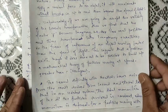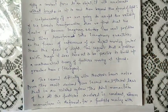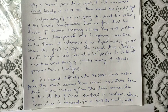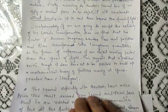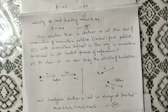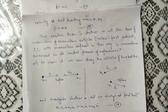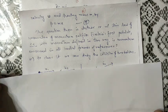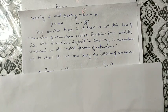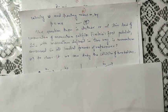The second difficulty with Newton's laws arises from a result derived from the second and third laws: in an isolated system, the total momentum of all particles involved is constant. However, momentum is defined for a particle moving with velocity u and mass m as p = mu. The question is whether or not this law of conservation of momentum is satisfied in all inertial frames of reference. To clarify this, let us take the example of a collision of two bodies.